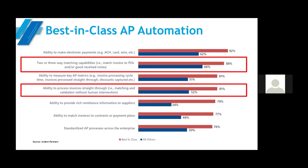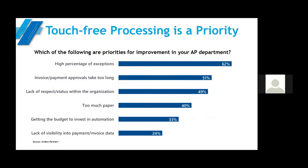Since best-in-class is what most organizations aspire to, this slide shows key capabilities that differentiate best-in-class from all others. Two highlighted capabilities are three-way matching and straight-through processing — key to becoming a best-in-class automation environment. To attain touch-free processing, reducing the number of exceptions is a very high priority. Besides working with suppliers to reduce errors, having a solution that utilizes self-learning through artificial intelligence will help reduce those exceptions on a permanent basis. This is a must in a best-in-class environment.